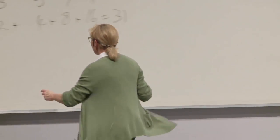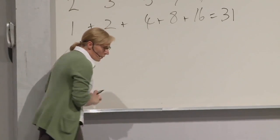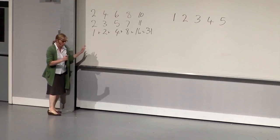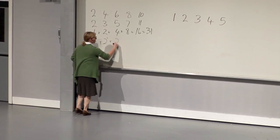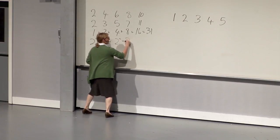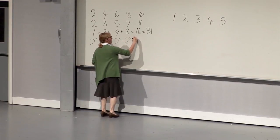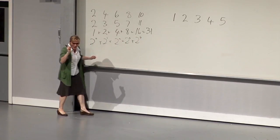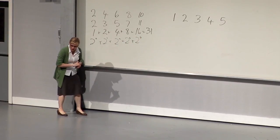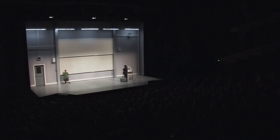I can also express the above series as the sum of the powers of two: two to the power of nought, plus two to the power of one, plus two squared, plus two cubed, plus two to the power of four. And using the sigma notation, I would write the sum from n equals nought to infinity of two to the n.